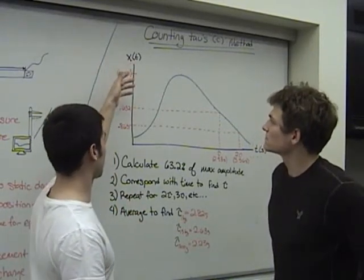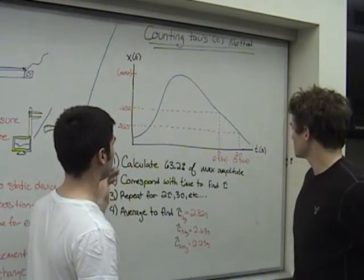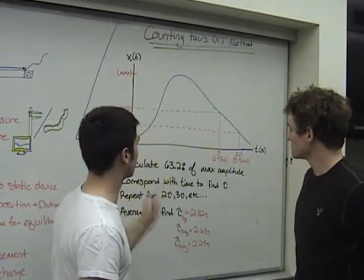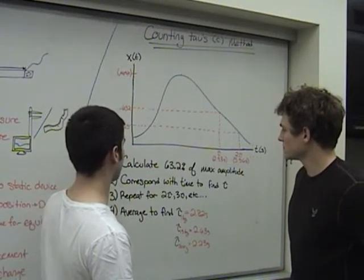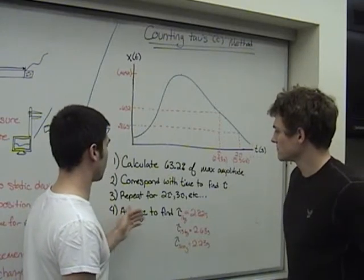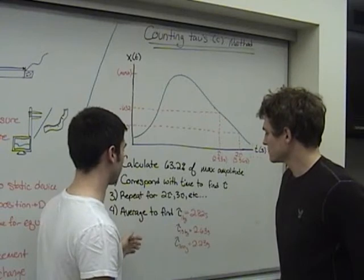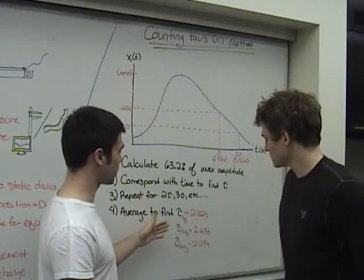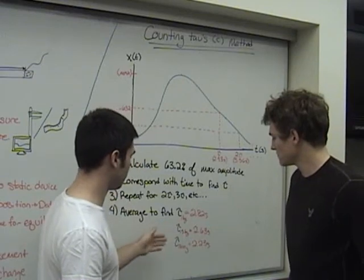So the way we're going to apply our counting tau is to calculate 63.2% of our max amplitude, and the time that we get from this will correspond with our time constant. And then we'll repeat the same process for t equals 2 seconds, 3 seconds, and 4 seconds. So for our 1 kilogram weight, we found that our time constant was 2.82 seconds. For 500 grams it was 2.63. And for 200 grams it was 2.23 seconds.